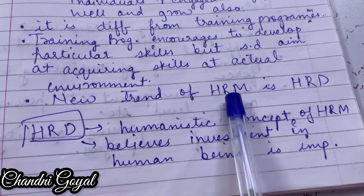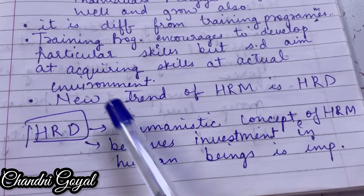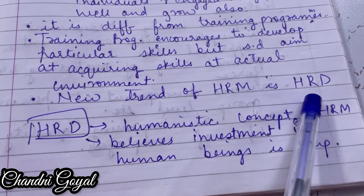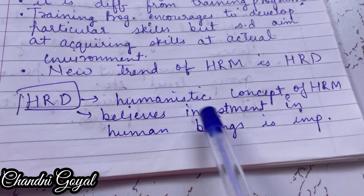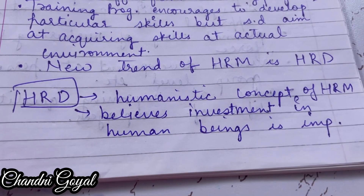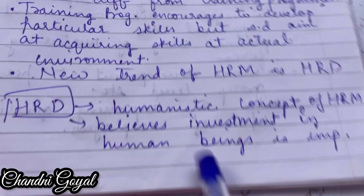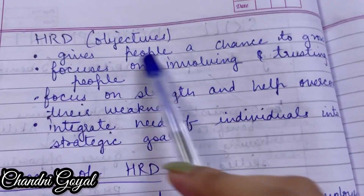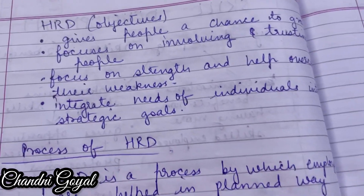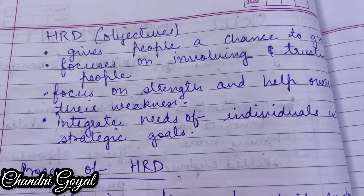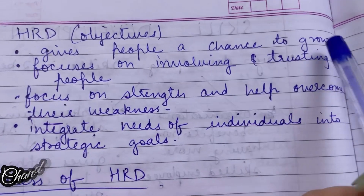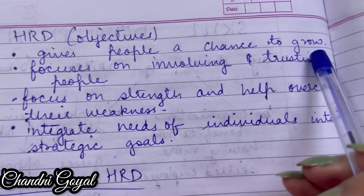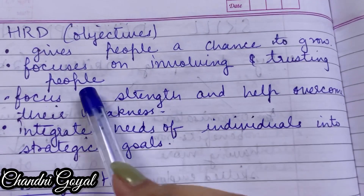New trends of HRM — Human Resource Management ka naya trend kia hai HRD, which is Human Resource Development. Human Resource Development kia hai? Ye HRM ka humanistic concept hai. Ye maanta hai ki human beings mein investment karna bahut zyada zaroori hai. HRD ka objective hai — kyunki human resource development aur skill development human beings ki hogi — isliye ye gives people a chance to grow.